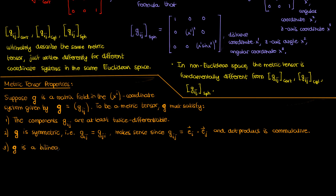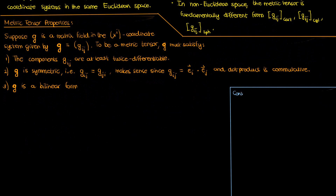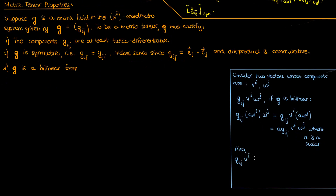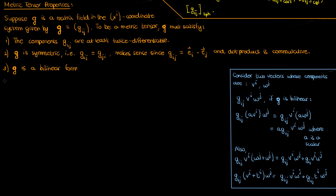The third property is that g is a bilinear form. Taking two random vectors with components v super i and w super j, and forming the expression g sub ij times v super i times w super j: if g is a bilinear form, then scaling either individual vector component by some factor a is the same as scaling the whole expression by a. In addition, adding a third vector u super j to w super j, or t super i to v super i, is the same as distributing that vector out in the way shown. If g satisfies these properties, that is one of the conditions it needs to satisfy to be a metric tensor.